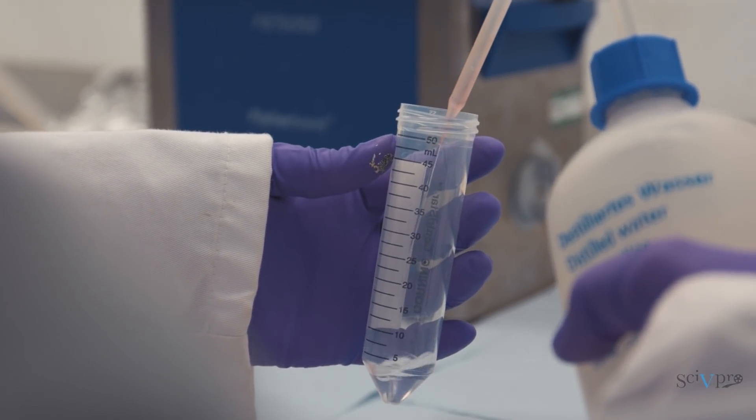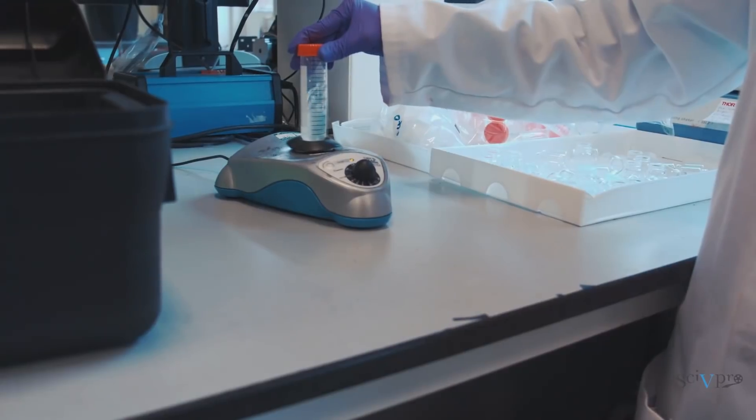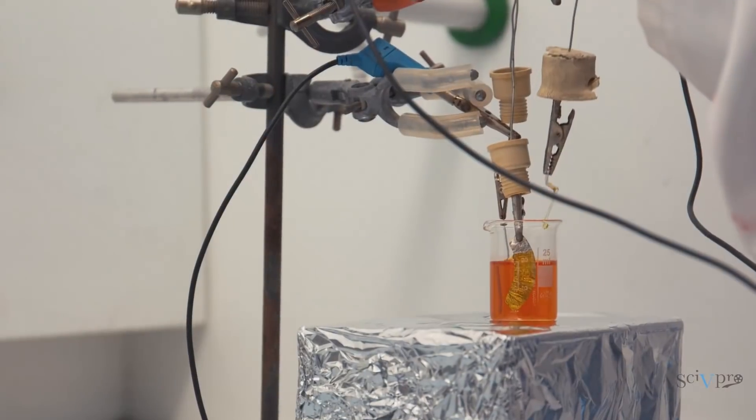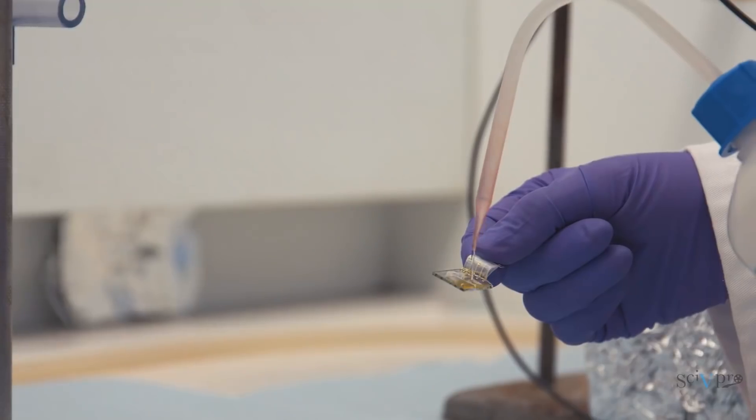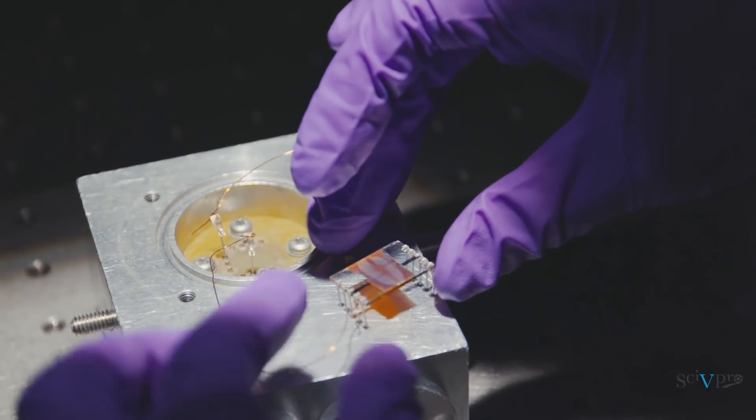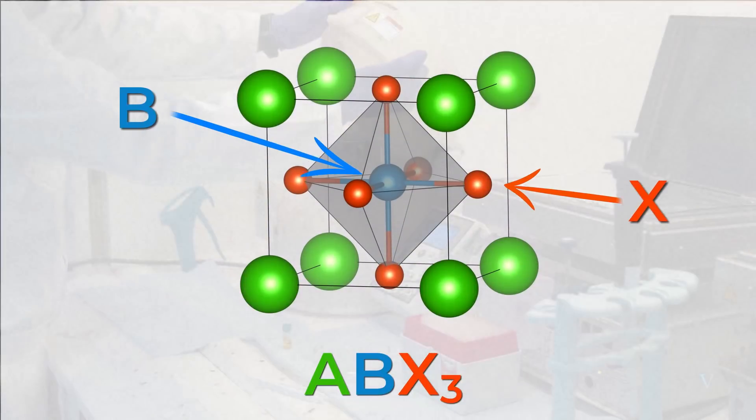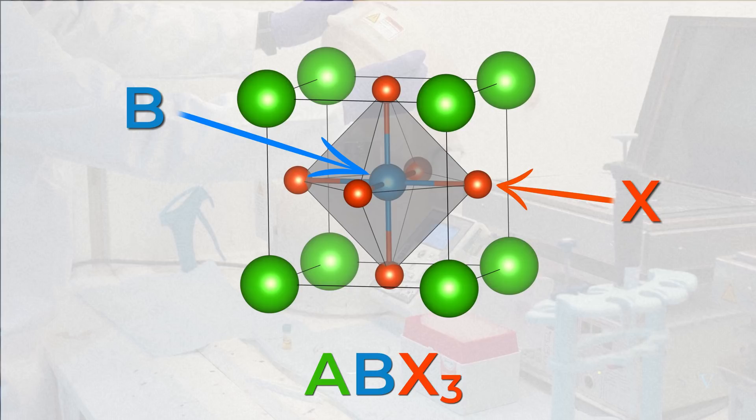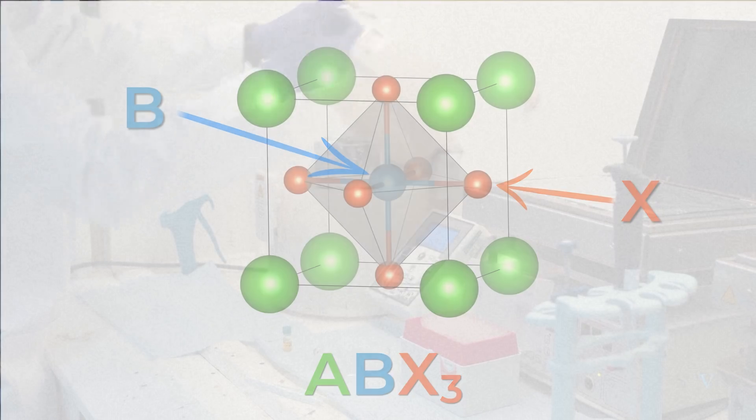Perovskites, like organic solar cells, are solution processable and also very defect tolerant, so they can be manufactured at very low temperatures very quickly and can also be printed on flexible materials. The two inorganic components of perovskites give it an edge over organic solar cells in development, as they allow the material to achieve very high efficiencies.